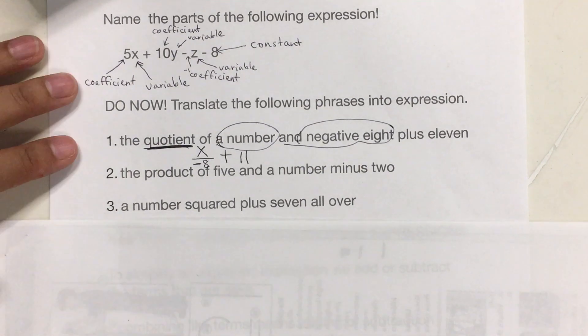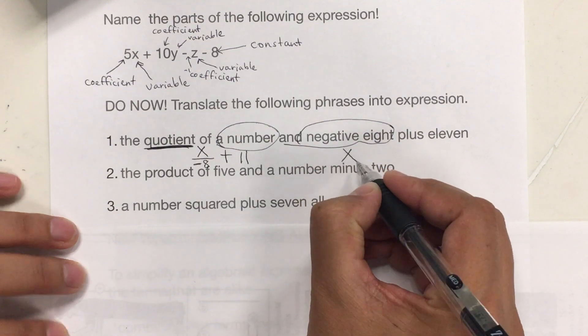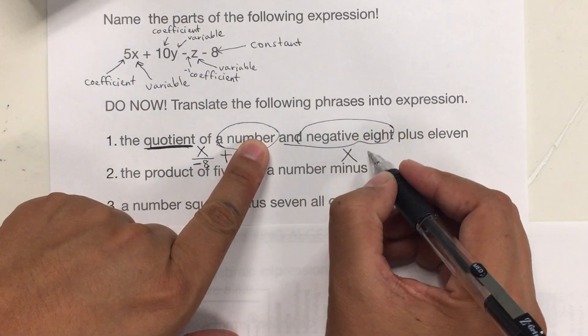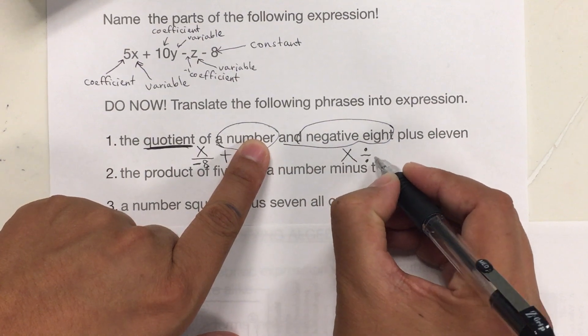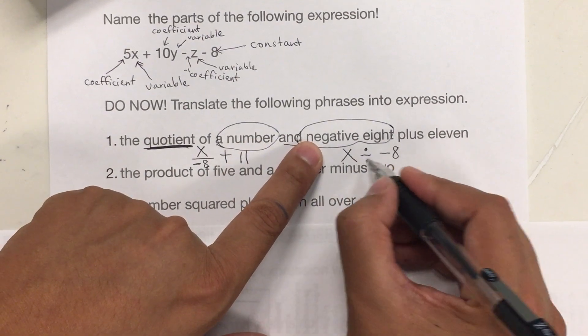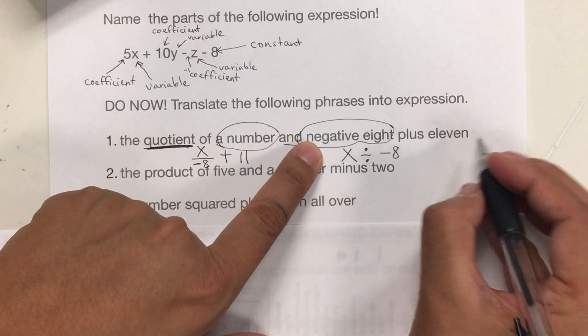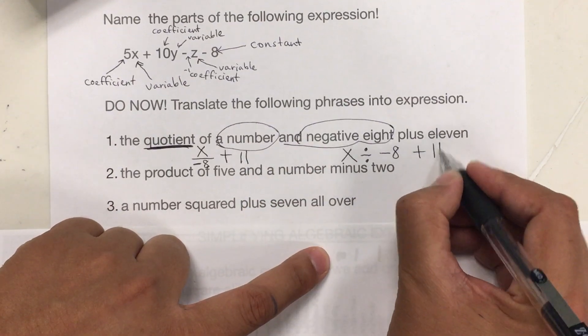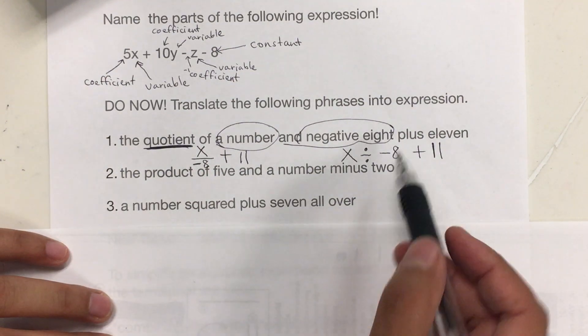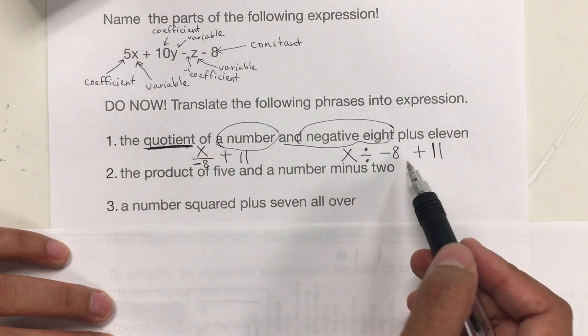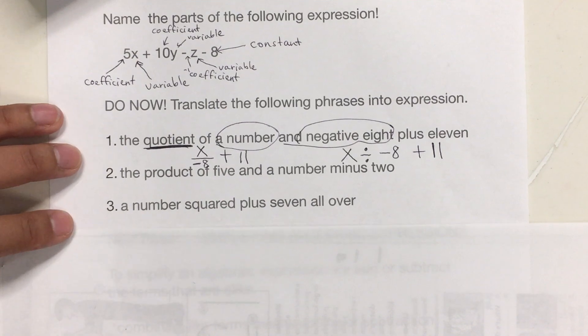Another way that you can do it is a number. The quotient of a number and negative 8. So, x divided by negative 8 plus 11. Those are two different ways to write it. And some people will even put parentheses, although not necessary.